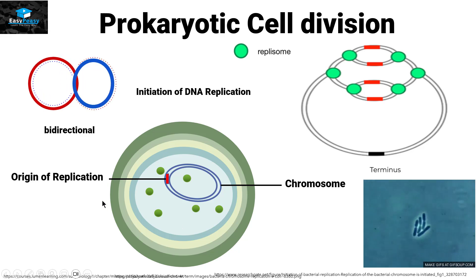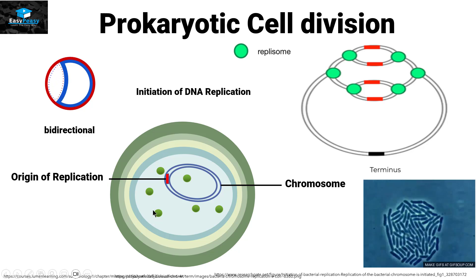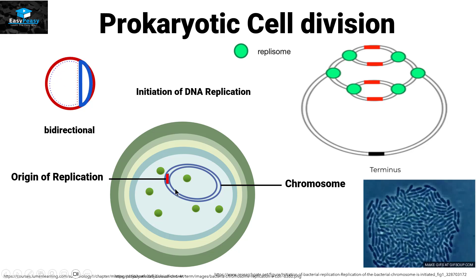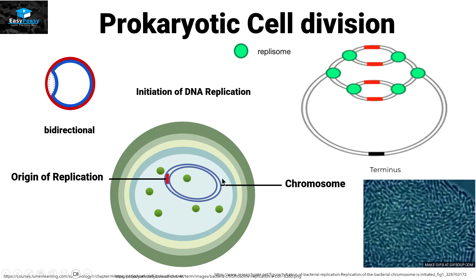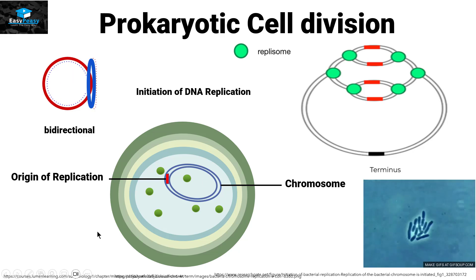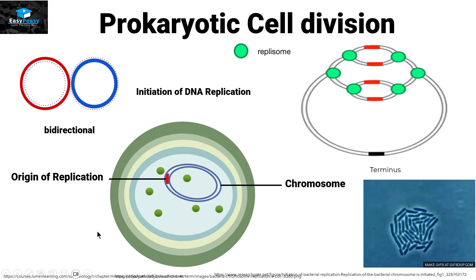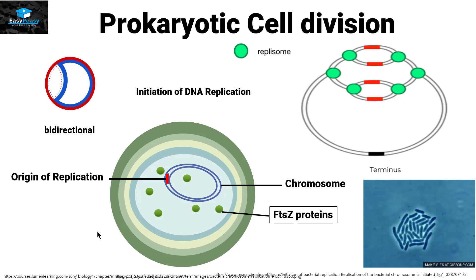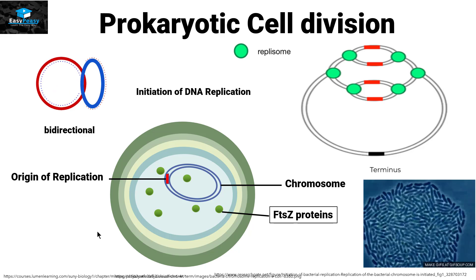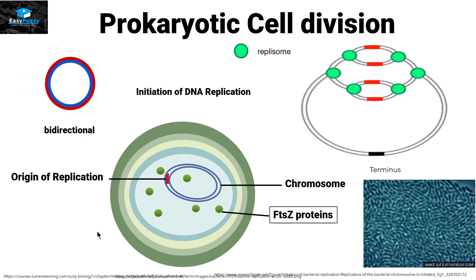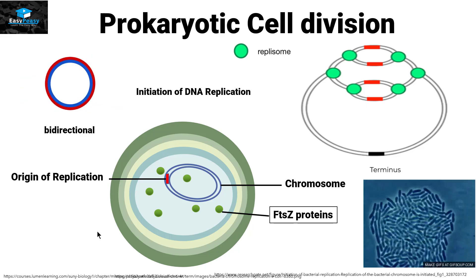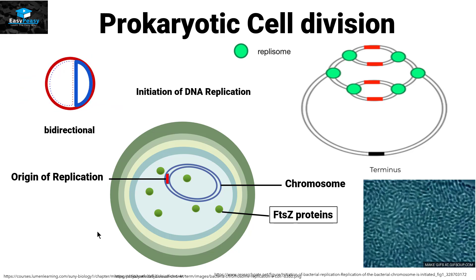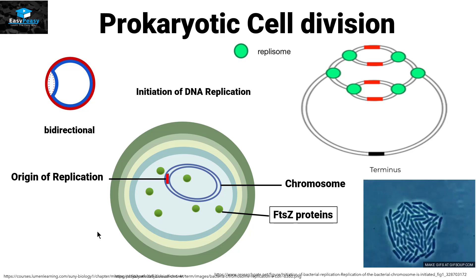Inside this prokaryotic cell, we can see small green circles present in the cytoplasm. These green circles are called FtsZ protein. We will discuss the function of this protein later on, but right now we are moving to the next stage, which is called chromosomal segregation.